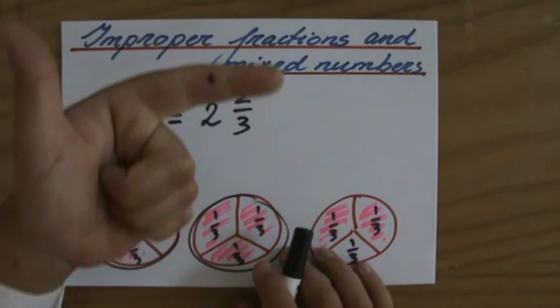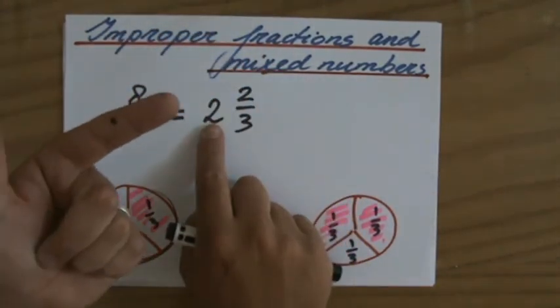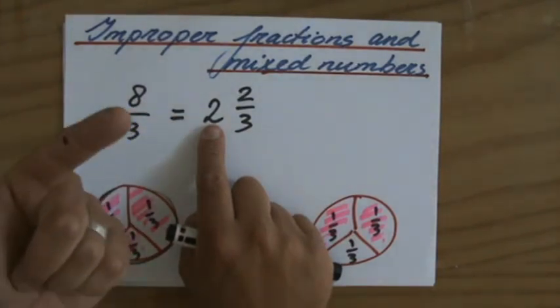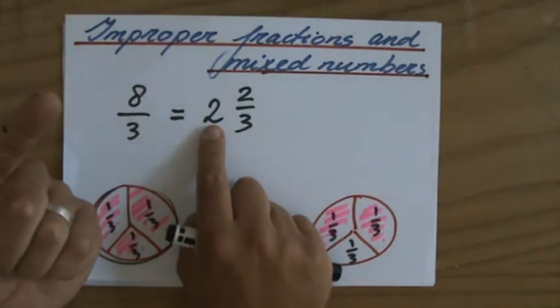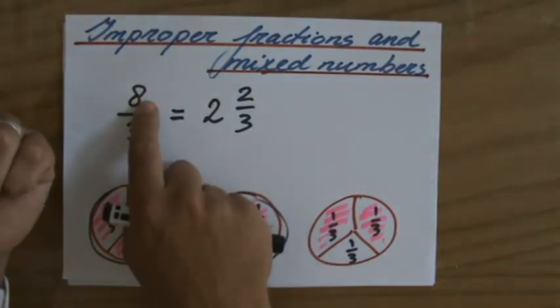Well, you have 3, 6, 9. So 9 is too much. So it fits in twice. So I have 2 wholes. Now, what is my remainder? When I take those 2 wholes out. So 3, 6. My remainder is 2.